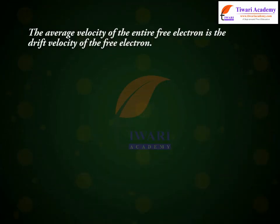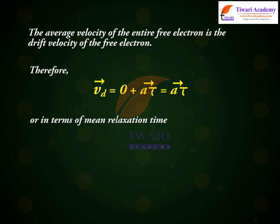The average velocity of the entire free electron is the drift velocity of the free electron. Therefore, vd vector is equal to 0 plus a tau vector is equal to a tau vector or in terms of mean relaxation time, vd vector is equal to minus ee tau vector by m.